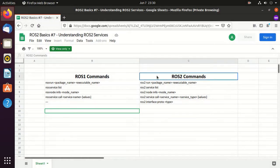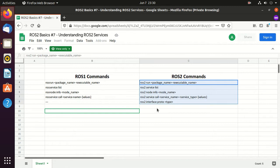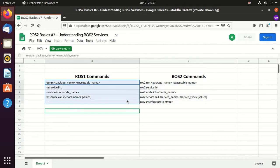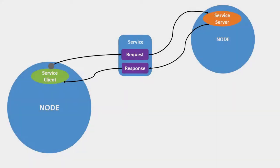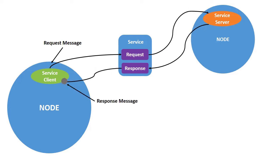On the right-hand side we have the ROS2 commands which we'll use in the video. If you already know ROS1, on the left-hand side you can find the corresponding ROS1 command. In simple terms, a service uses a request and response model — for example, a service client requests the robot to pause, and the service server does the task and sends a response such as pausing successful or unsuccessful.